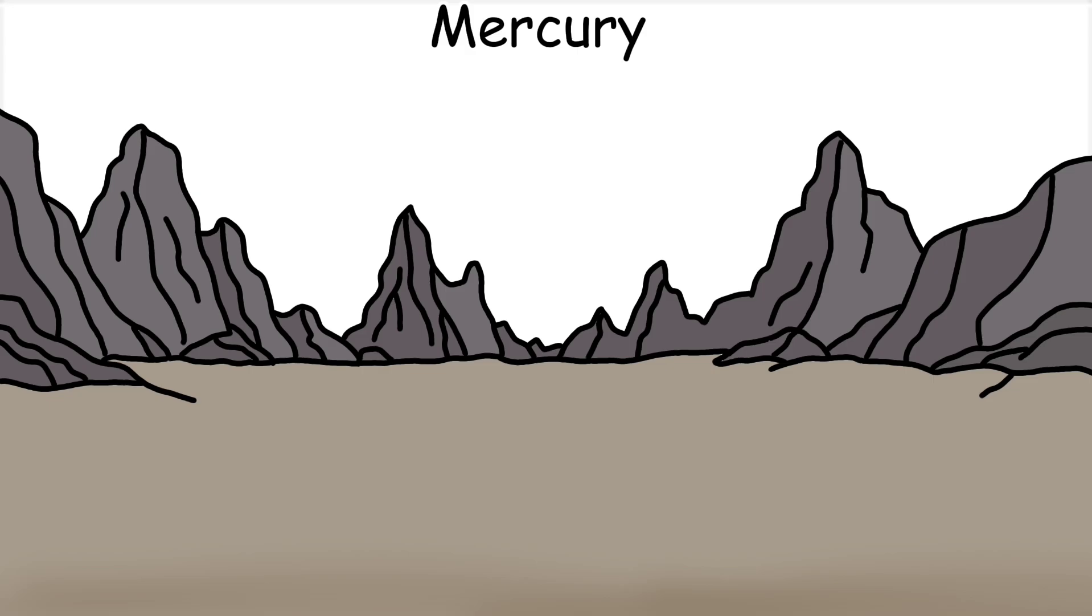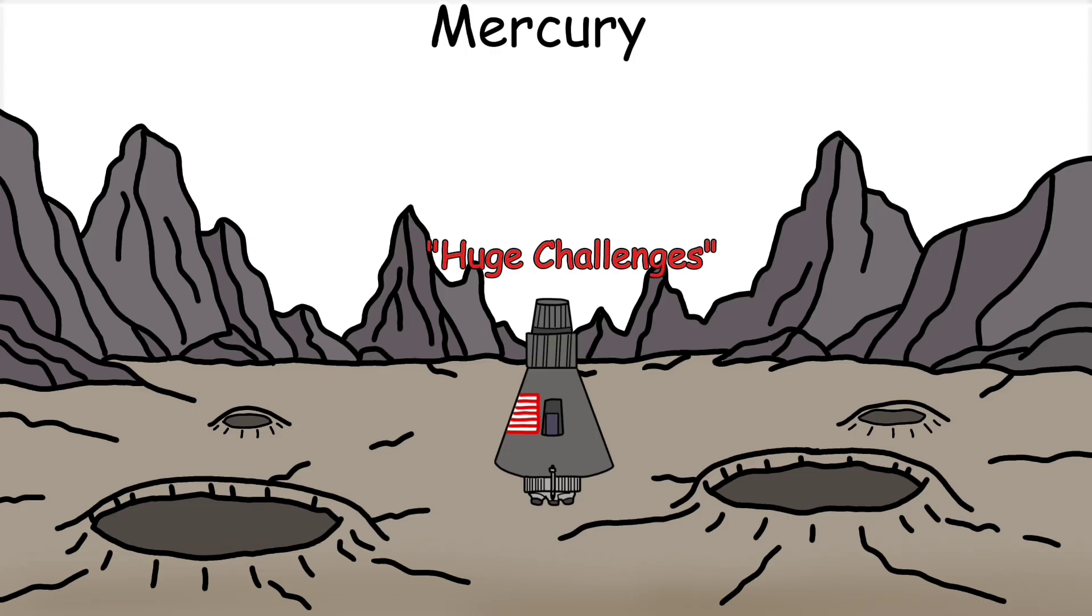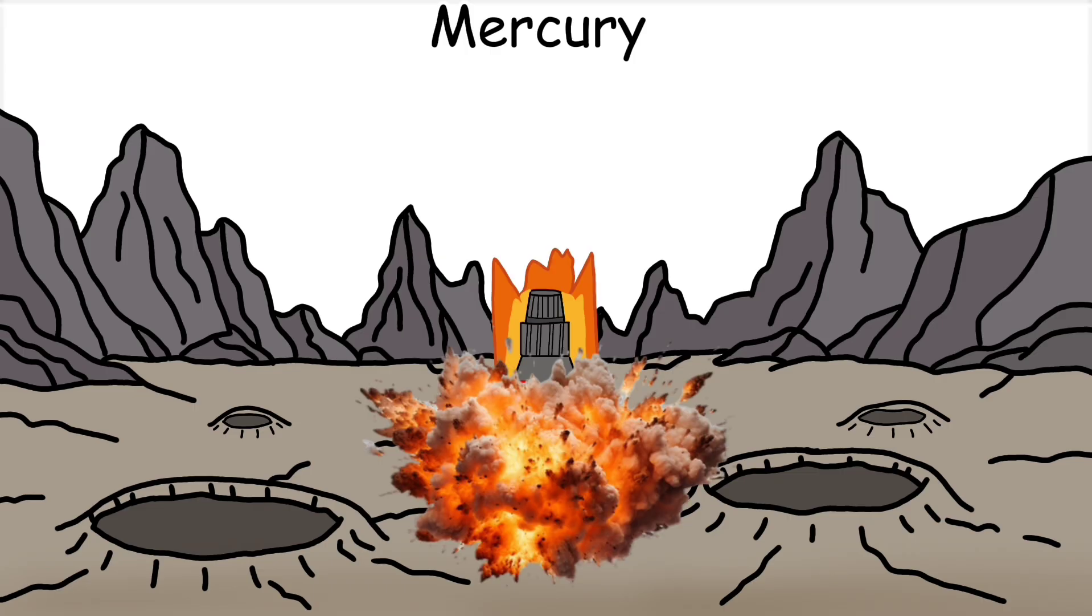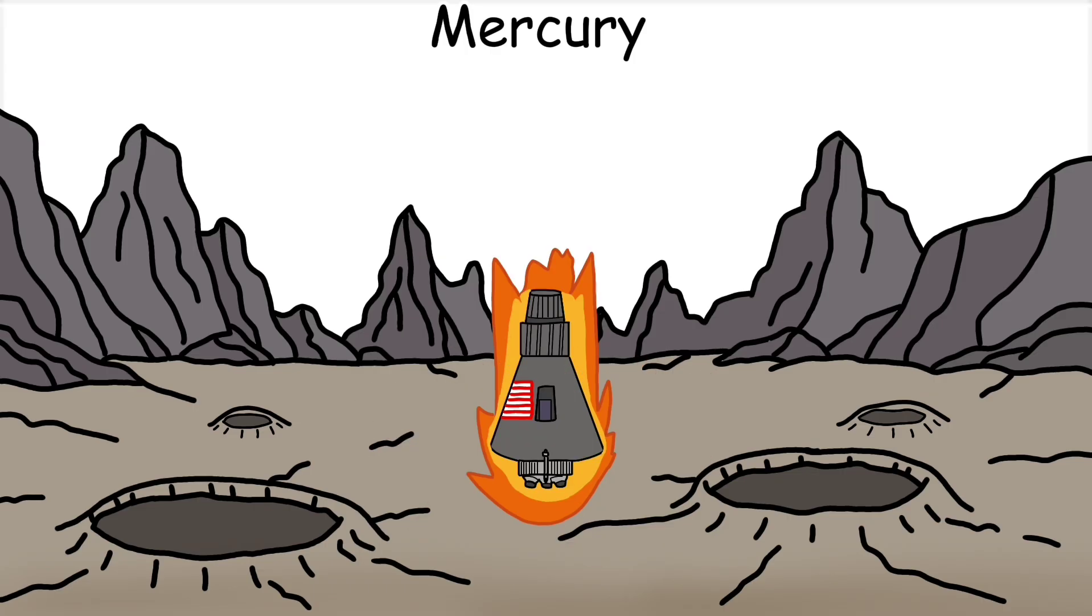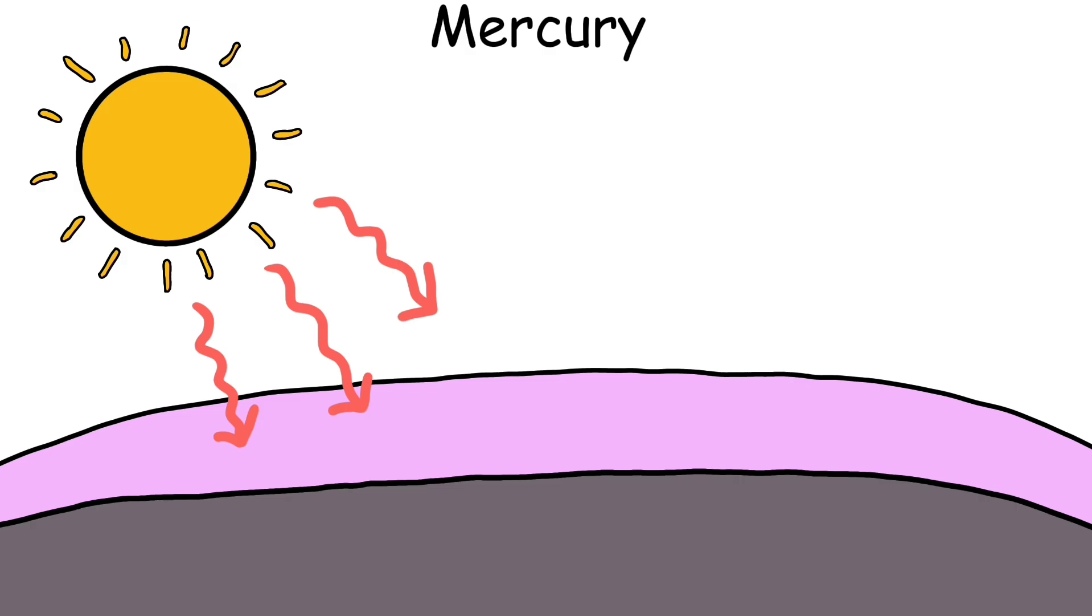Without a proper atmosphere, meteors can strike Mercury directly. This has created a surface filled with craters, cracks, cliffs, and rough terrain, making landing extremely difficult. Any spacecraft attempting to land here would face huge challenges. Without air resistance, slowing down is very hard, and the spacecraft could easily crash into the rocky surface. Friction and heat could even produce sparks or flames around it. Mercury doesn't have any ozone layer, which means the radiation coming from the sun directly hits the surface of the planet. And there isn't enough oxygen on Mercury to breathe.